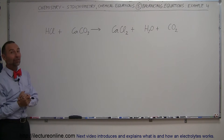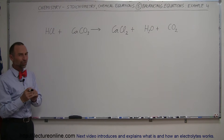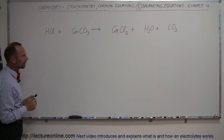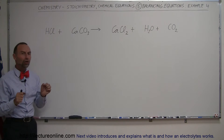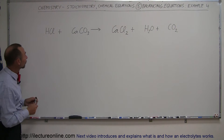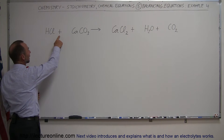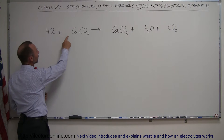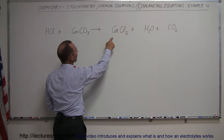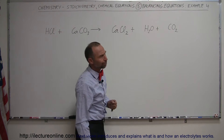Here's another example on how to balance equations. This time we're going to throw in an extra step because sometimes the equations can get quite complicated and it's hard to keep track of all the elements on both sides. Here we have hydrochloric acid that reacts with calcium carbonate, and it yields calcium chloride plus water plus carbon dioxide gas.